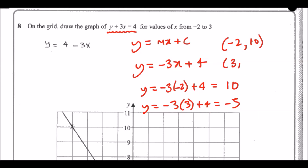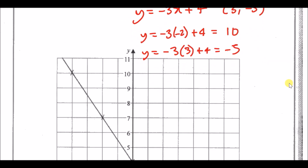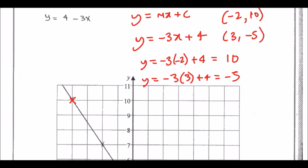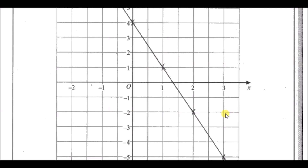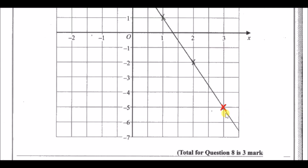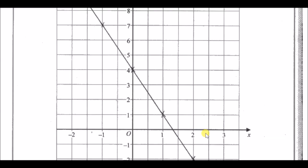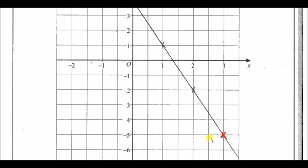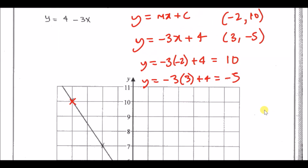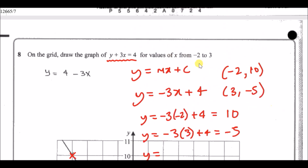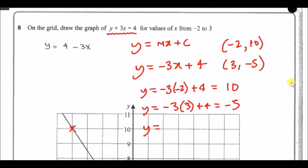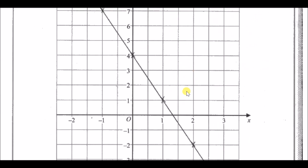Plot (-2, 10) and (3, -5): go three across and drop five down. To be extra safe, find a third point — for example x = 0: minus three times zero plus four equals four, giving coordinate (0, 4). That checks out, and connecting the points gives you the straight line.